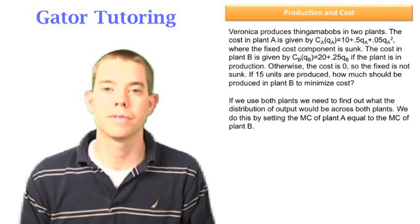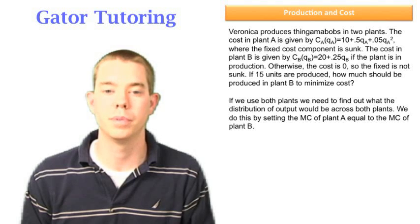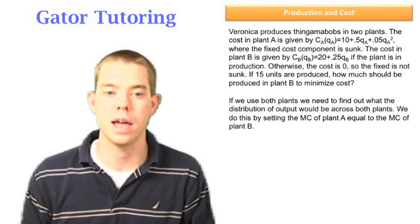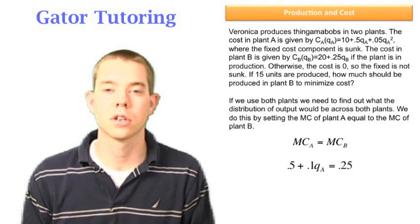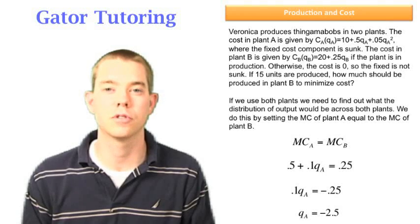If we use both plants, we need to find out what the distribution of output would be across both plants. We do this by setting the marginal cost of plant A equal to the marginal cost of plant B. We work through it and solve, and we get QA = -2.5.